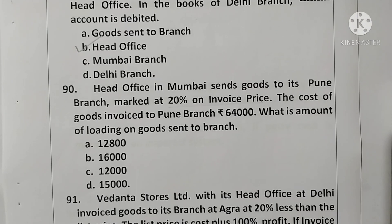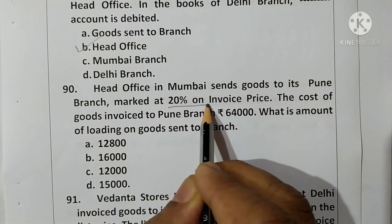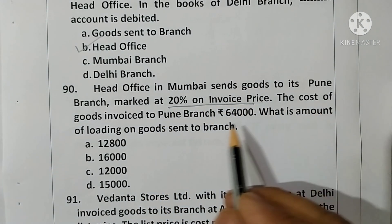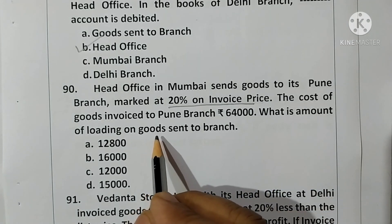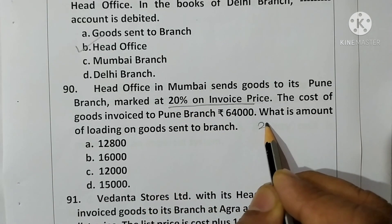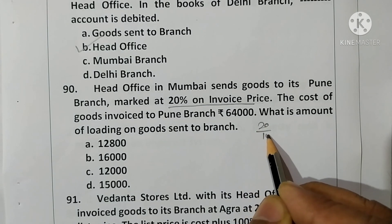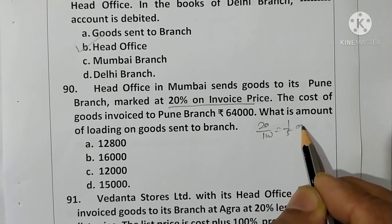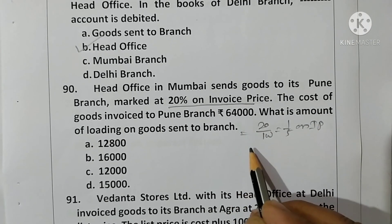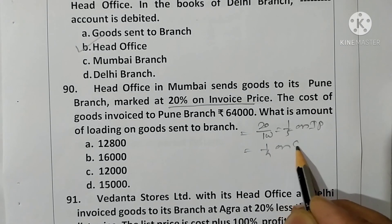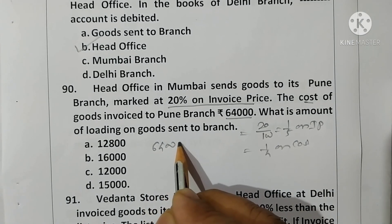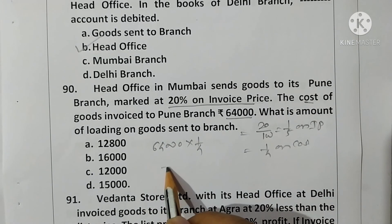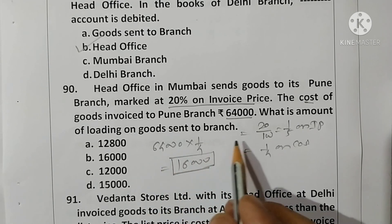Question 90: Head office in Mumbai sent goods to its Pune branch marked at 20% on invoice price. The cost of goods invoiced to the branch is rupees 64,000. What is the amount of loading? 20% on invoice price means one-fifth on invoice price, which means one-fourth on cost price. Cost price is 64,000; one-fourth of that is rupees 16,000. Option B is correct.